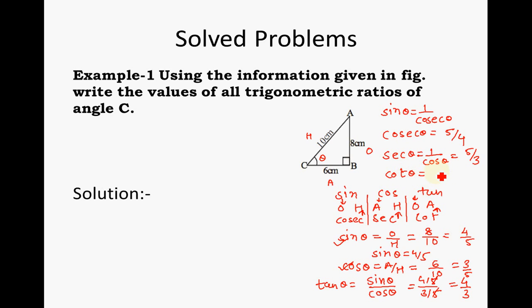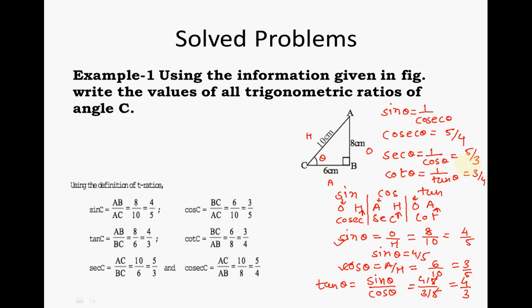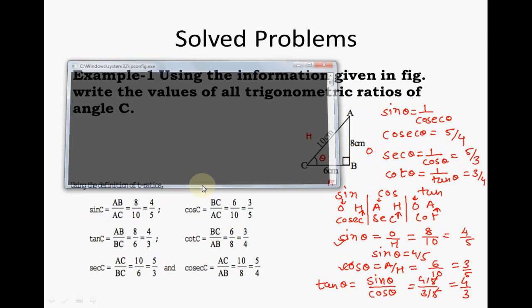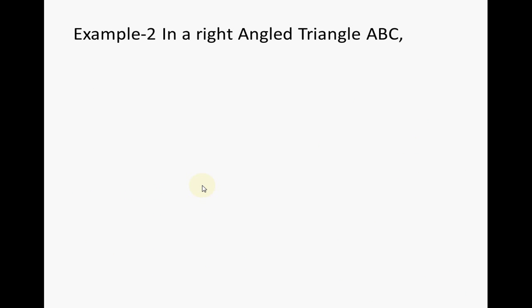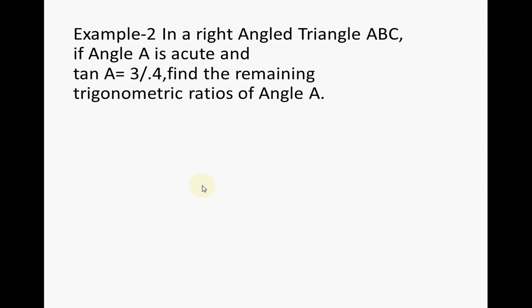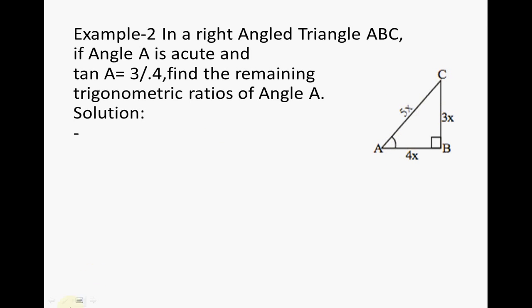From the reciprocal theorem, sin theta and cosec theta are reciprocals of each other, so cosec theta equals 5 by 4. Similarly, sec theta is the reciprocal of cos theta, equal to 5 by 3. And cot theta is the reciprocal of tan theta, which equals 3 by 4. By using a simple angle and the geometrical information, we can calculate all the trigonometric ratios — sin C = 4/5, cos C = 3/5, tan C = 4/3, and all other values in a systematic manner.